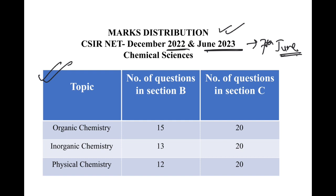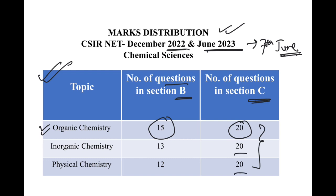Let's start. Looking at the number of questions: in Section B we got 15 questions from organic, and in Section C we got 20. Section C has 20-20-20 questions for organic, inorganic, and physical chemistry. For Section B there is a difference: 15 questions on organic, 13 on inorganic, and 12 on physical chemistry — as observed in the 7th June paper.